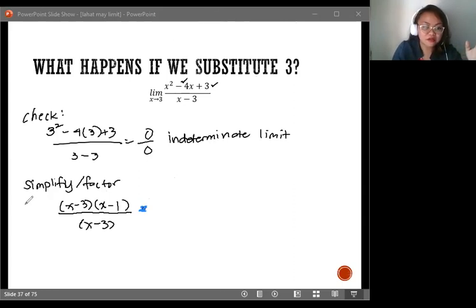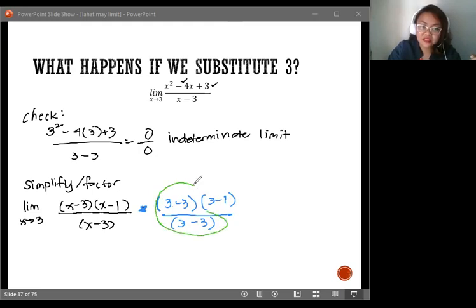Say we are getting the limit of the function, of this factored function, as x approaches 3. If I substitute it here, you will see. Sorry, let's use some blue ink. You don't have to do this. I just want you to see why it's correct. 3 minus 3. And this is 3 minus 1 all over 3 minus 3.